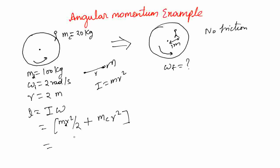And that gives us 100 times radius is 2. So it's 4 over 2 plus 20 times 4. r² is 4. And that gives us 280 kg m².